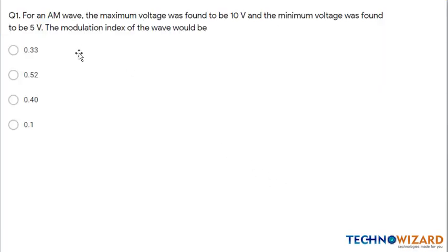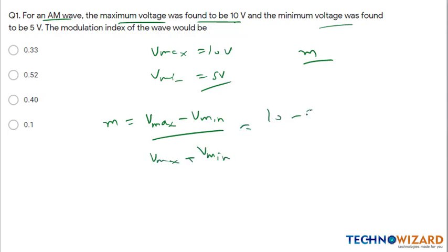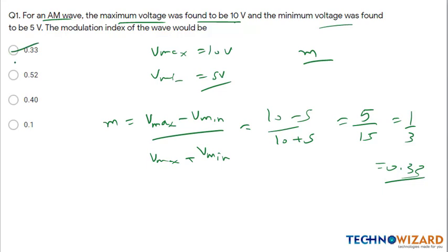Question 1: For an AM wave, the maximum voltage was found to be 10 volts (Vmax = 10V) and the minimum voltage was found to be 5 volts (Vmin = 5V). We have to find the modulation index M. The modulation index is given as (Vmax − Vmin) / (Vmax + Vmin) = (10 − 5) / (10 + 5) = 5/15 = 1/3 = 0.33. Therefore option A is the correct answer.